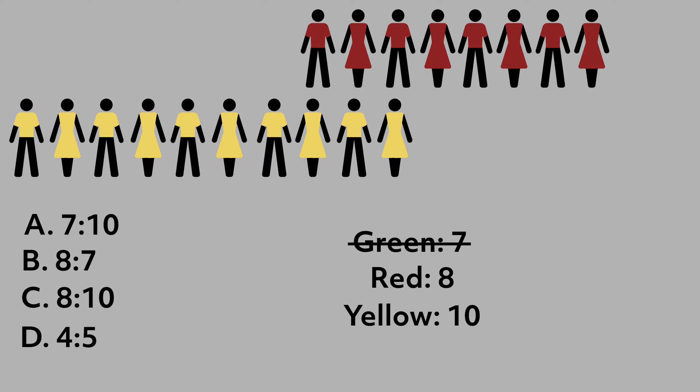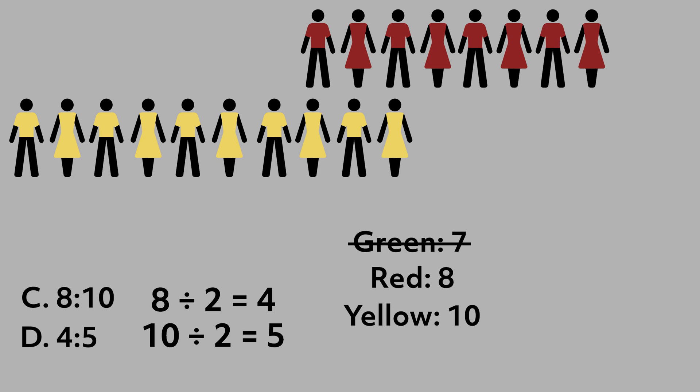Now let's take a look at each of our options and eliminate. It can't be seven to ten — we don't care about the green shirts. It can't be eight to seven, because again, we don't care about the green shirts. Option C is correct; that is the exact number ratio we found. Now look closely at D — is four to five not the same thing as eight to ten? Eight and ten are both divisible by two, and when we reduce them both down, we get four to five. So D is also correct.